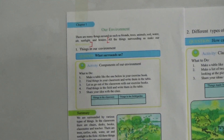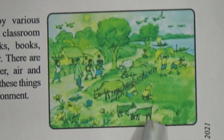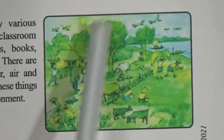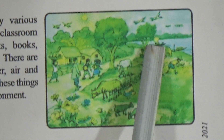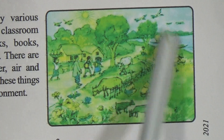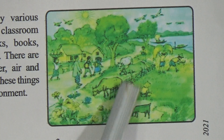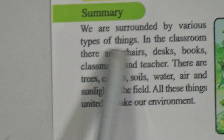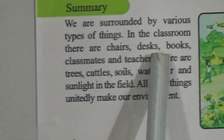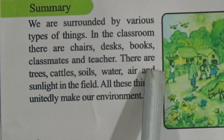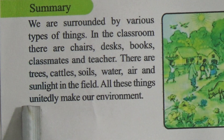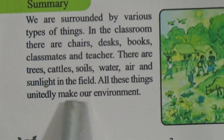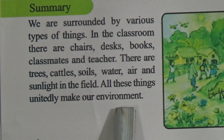Dear students, if you observe the picture, there are some people walking, some people working, there are some cattle — that means cows — some plants, some birds, hills, a river, some boats, some houses. All these things make our environment. Some are living, some are not living, some are man-made, some are natural. In the classroom there are chairs, desks, books, classmates, and teachers. In the field there are trees, cattle, soil, water, air, and sunlight. All these things unitedly make our environment.